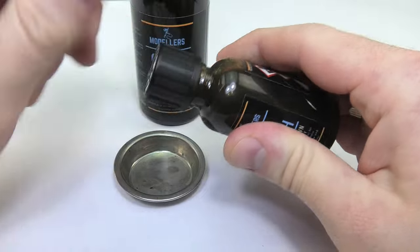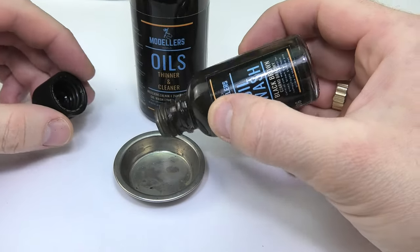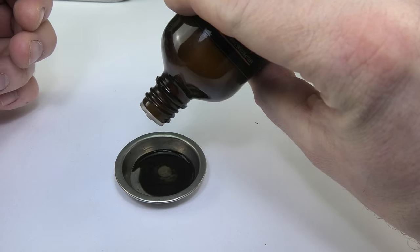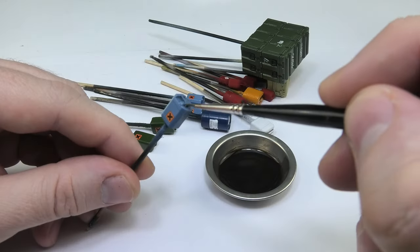The basic wash was done by diluting the black-brown with a few drops of thinner. There is nothing to say here, making a wash on such elements is a simple task.